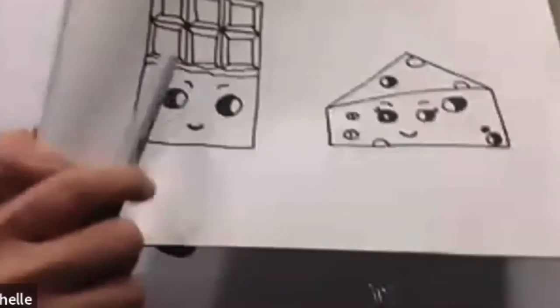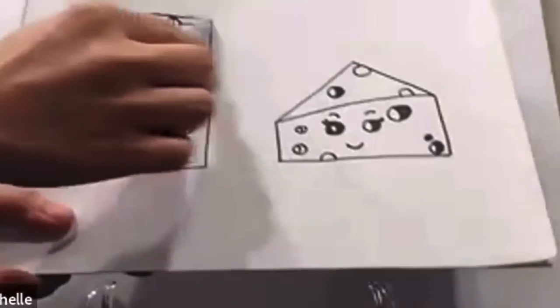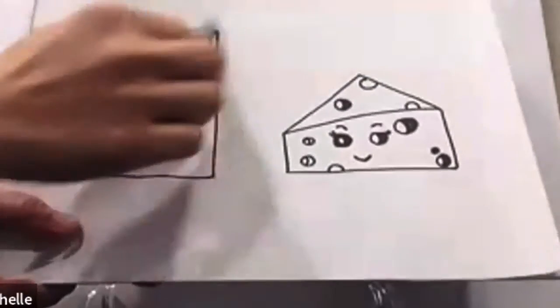So we'll start with the chocolate first. To make the chocolate we're going to do an upright rectangular shape kind of like this. Save a little space to the right side of your paper, we're going to do the chocolate on the left side.